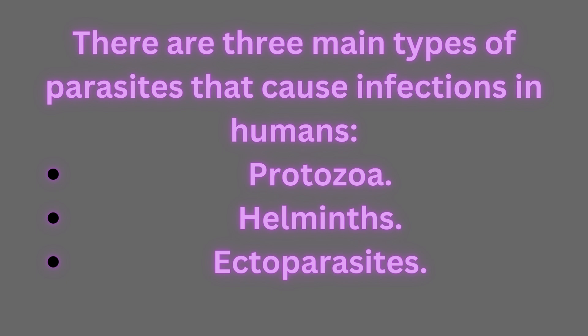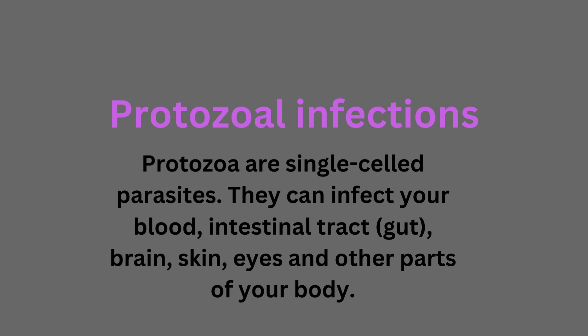There are three main types of parasites that can cause infections in humans: protozoa, ectoparasites, and helminths. Protozoa are single-celled parasites that can affect your blood, intestinal tract, brain, skin, eyes, and other parts of your body. These can affect the brain, which is highly dangerous with a very high fatality rate if untreated. Brain infections of any kind — abscesses, infections, parasites, aneurysms — are all dangerous when left untreated.